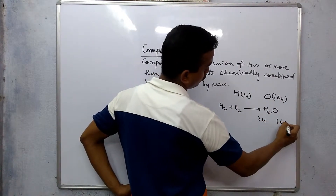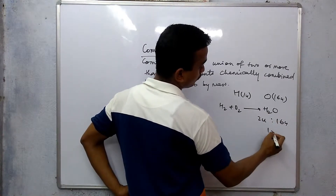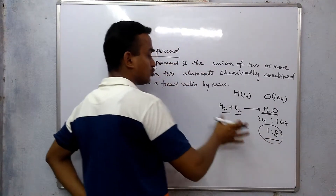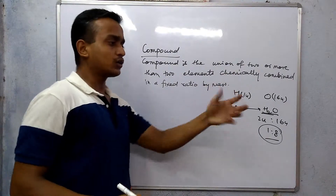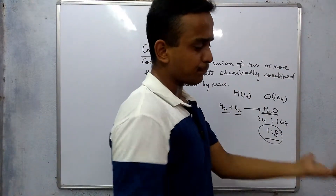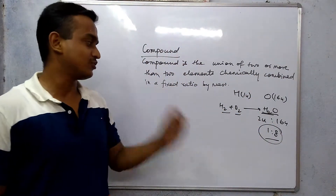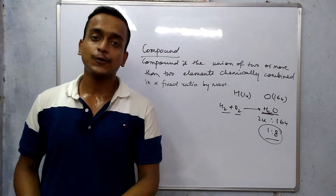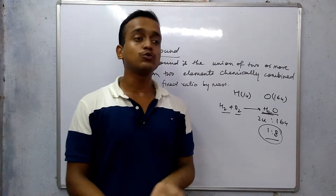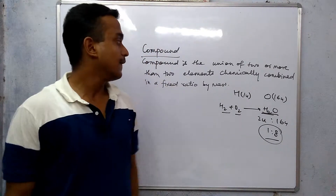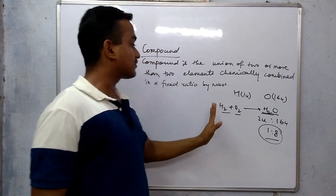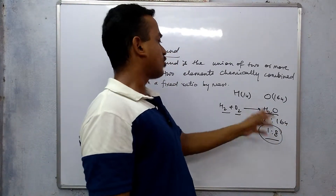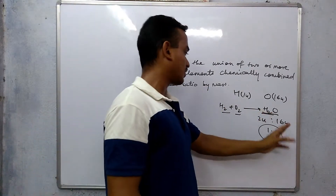Fixed ratio by mass means: hydrogen is 2u, oxygen is 16u, so the ratio is 1 is to 8. When water is made, it will always be in a 1:8 ratio by mass. This ratio does not depend on the source of the water — ground water, tap water, pond water — that ratio will always be the same. The particular chemicals will always be found in the same fixed ratio.